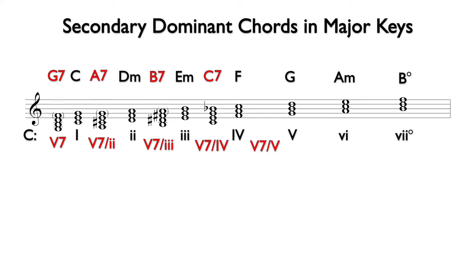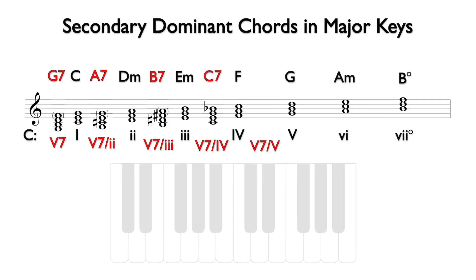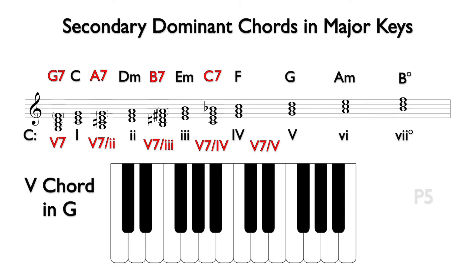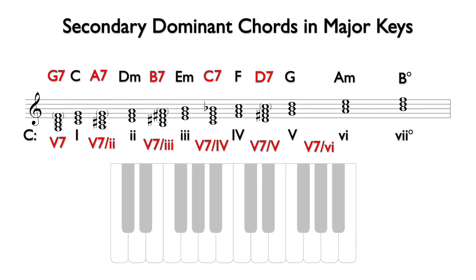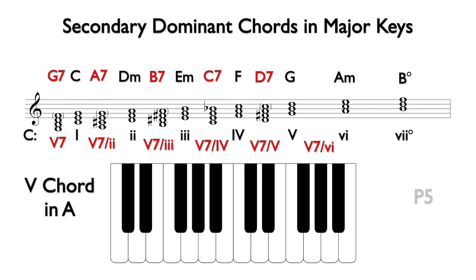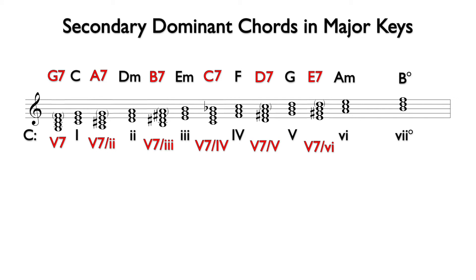Next, we will find five or V7 of five. We find the five chord in G, which is an interval of a fifth above G. This is D or D7, and the notes are D, F sharp, and A for the triad, with C added for the seventh. Next, we will find five or V7 of six. We find the five chord in A, which is an interval of a fifth above A. This is E or E7, and the notes are E, G sharp, and B for the triad, with D added for the seventh.